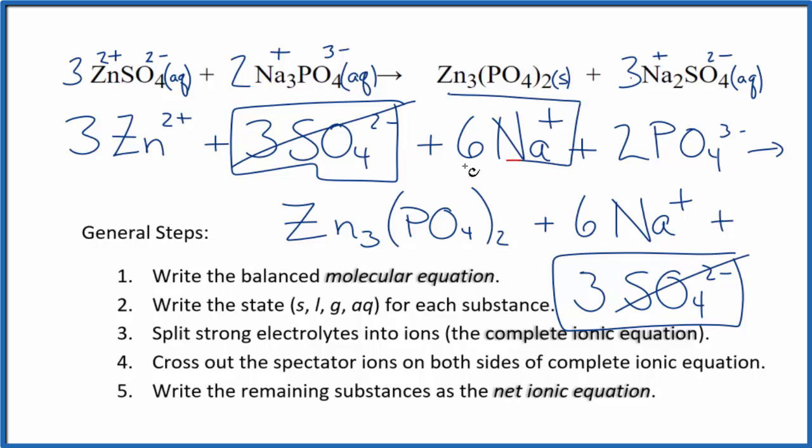Six sodium ions here in the reactants and in the products. Spectator ions. Cross them out. What's left, that's the net ionic equation for zinc sulfate plus sodium phosphate. I'll clean it up. Write the states. We'll have our net ionic equation.